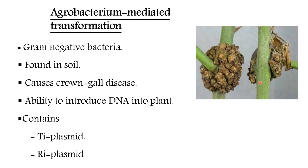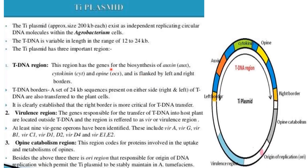Agrobacterium-mediated transformation is a gram-negative bacteria found in the soil that causes crown gall disease. It has the ability to introduce DNA into the plant, and it contains a Ti plasmid and an Ri plasmid. The Ti plasmid exists as an independently replicating circular DNA molecule within the Agrobacterium cell, and is variable in length, ranging from 12 to 24 kb.